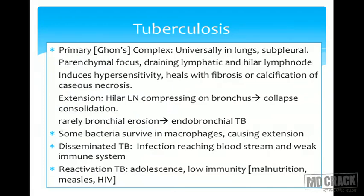Tuberculosis is common in developing countries like India; the typical age group affected is five to fifteen years. The primary Ghon's complex is universally seen in the lungs — bacteria enter, travel to the sub-pleural parenchyma, replicate there, and together with the draining hilar lymph nodes form the Ghon's complex or primary complex. This focus induces a delayed hypersensitivity reaction with caseating necrosis followed by fibrosis and calcification, as the body walls off the infection.